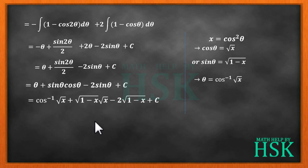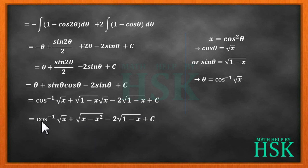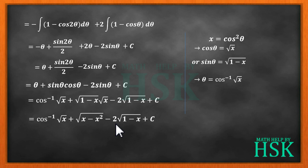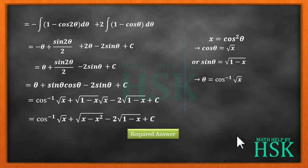So for θ I place cos⁻¹(√x), for cos θ I place √x, and for sin θ I place √(1 minus x), plus C. So these terms give my answer as equal to cos⁻¹(√x) plus √(x minus x²) minus 2√(1 minus x) plus C, which is my required answer.